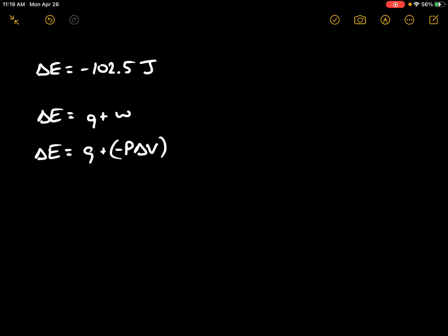We can substitute our values in here and solve for delta V, so this is minus 102.5 joules. Q is the heat the system absorbs, so 52.5 joules, and this would be minus P delta V.